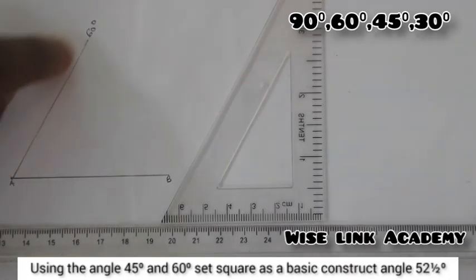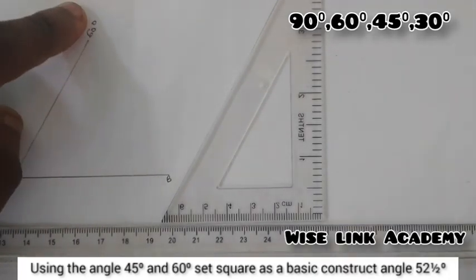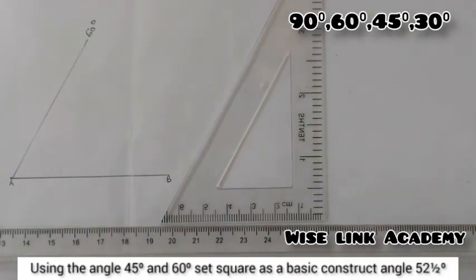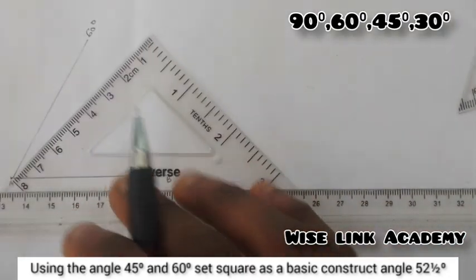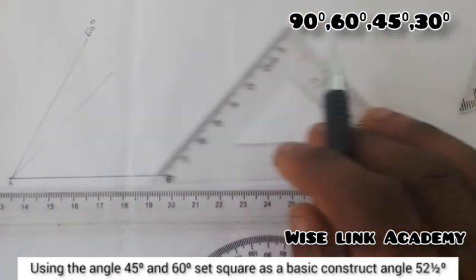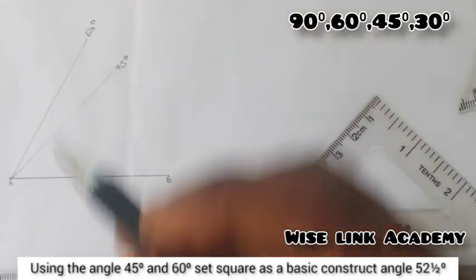You must not take it because we're not told to find 60. We're told to find 52.5. So instead, we're going to construct 60 and 45. So I'll take my 45 this way. At this point, draw a faint line to indicate 45 degree.